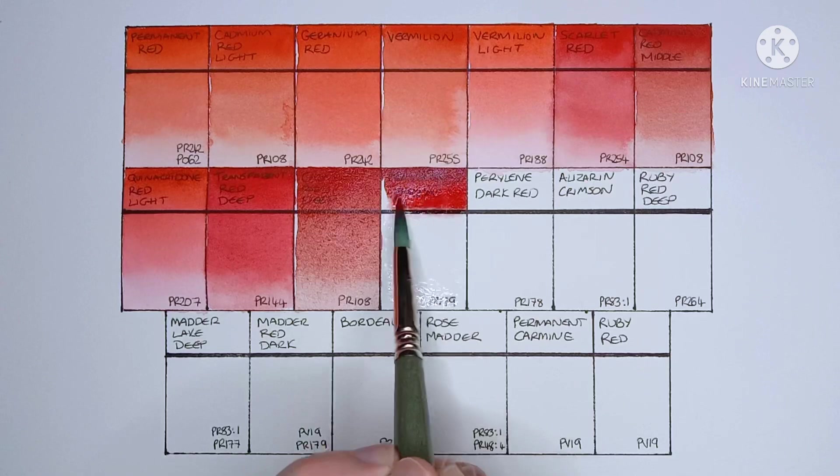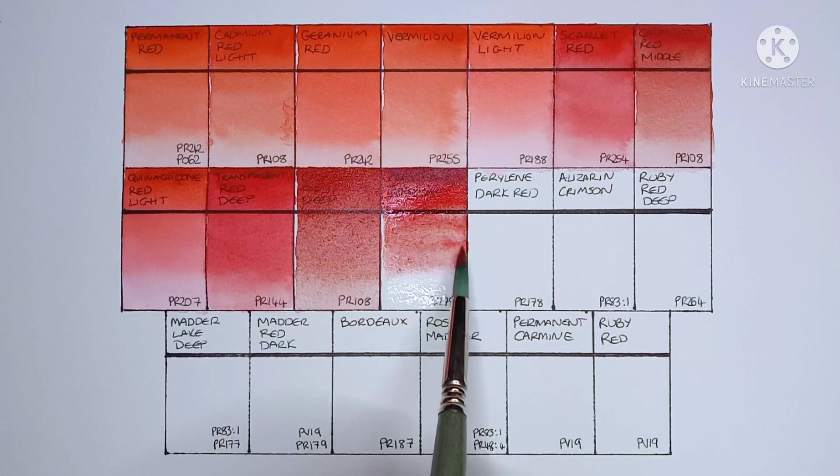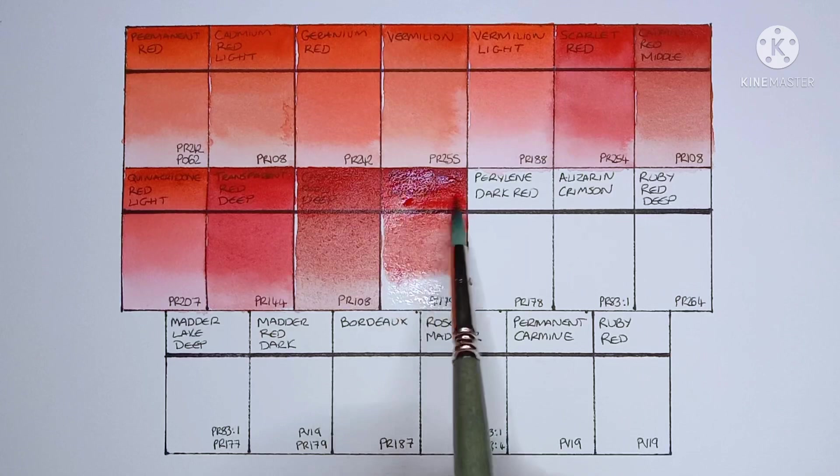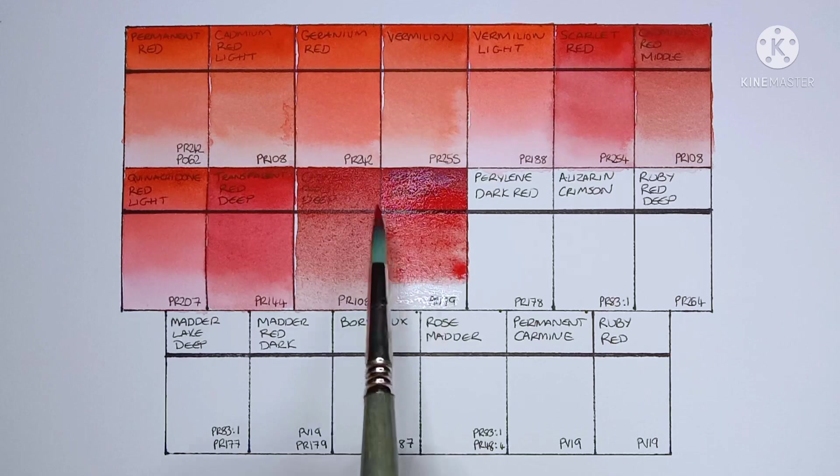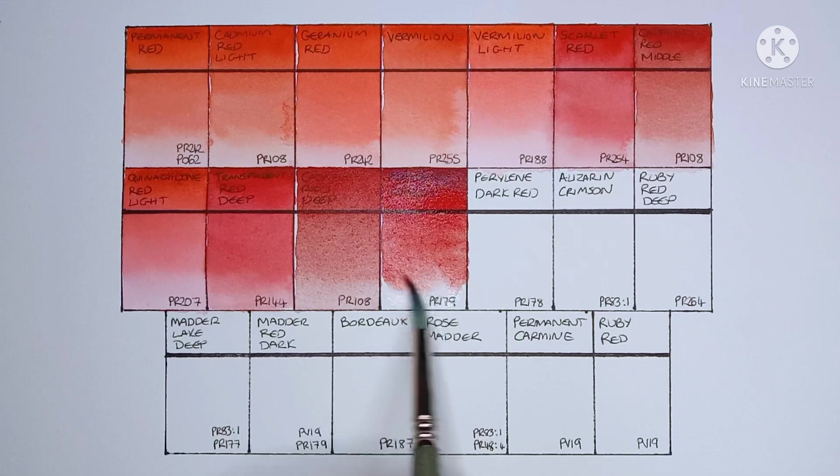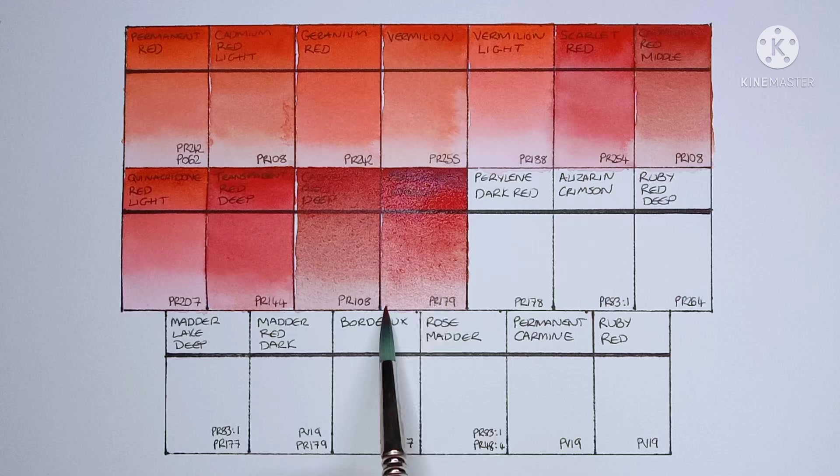Next we have perylene maroon, PR179. I think the only other version I've tried of this pigment is from Holbein, and yeah, I really do like that paint. Yeah, I'd say this one is very nice, but I don't think it's quite as nice as the Holbein. I guess I'd have to paint them side by side to really be able to compare them though.